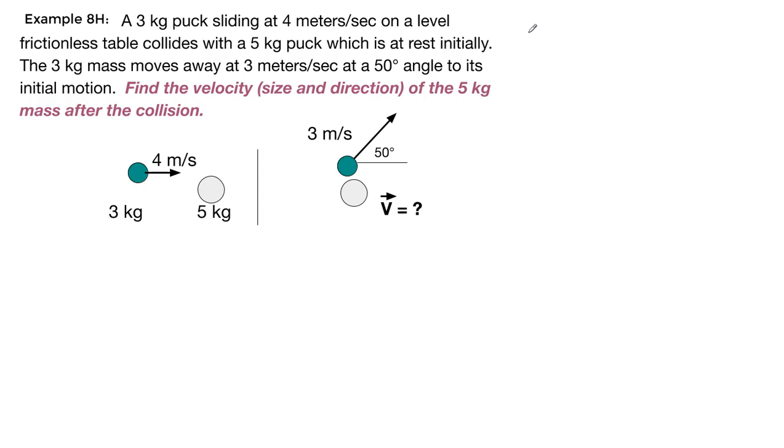One of the most important things I can recommend with two-dimensional problems is to make a longer list to really make sure we know what information we have and what information we're looking for. In these two-dimensional problems, there are only 10 total things that can ever show up: the mass, the initial velocity in the x direction, the initial velocity in the y direction, the final velocity in the x direction, and the final velocity in the y direction for both the first mass and the second. Making this list will help make sure that we're thinking about where all of our different number values go.